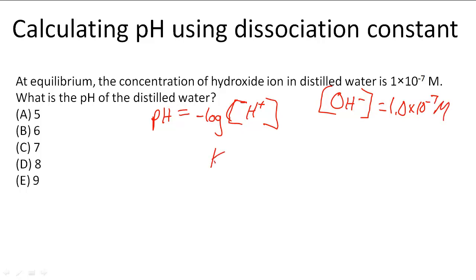So we're going to use the constant Kw, which we know is the concentration of H plus times the concentration of OH negative to solve this problem.